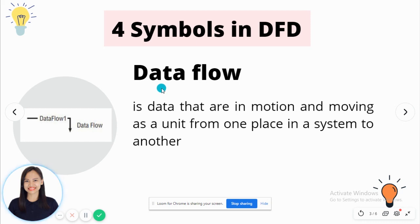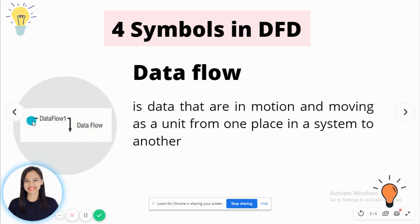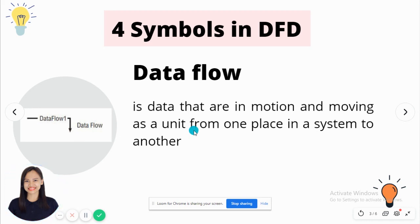The first symbol is Data Flow. This is the symbol of the Data Flow. It has a text between its arrow and the end arrow has an edge. It is data that is in motion, moving as a unit from one place in a system to another — it's the data that flows in your system.